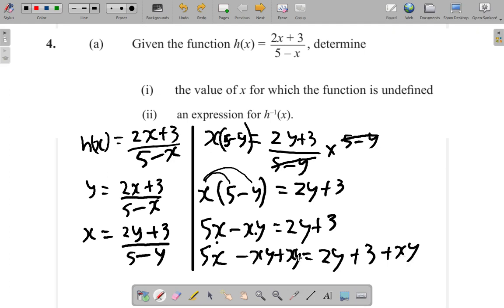So what I will have is 5x equal, and then 2y plus xy plus 3. Just rearrange these: 2y plus xy plus 3.